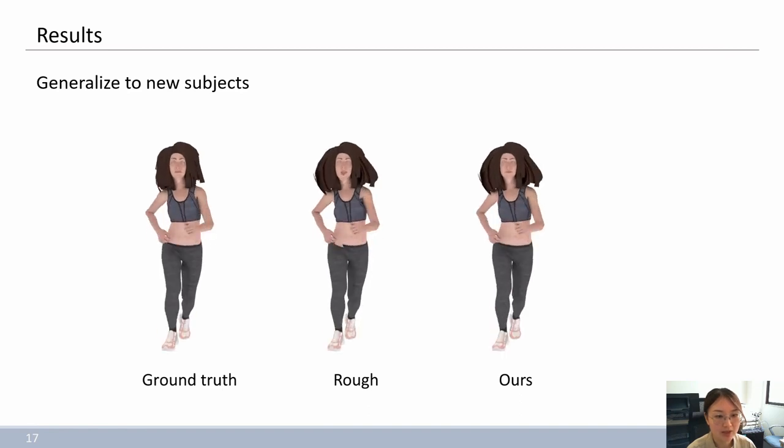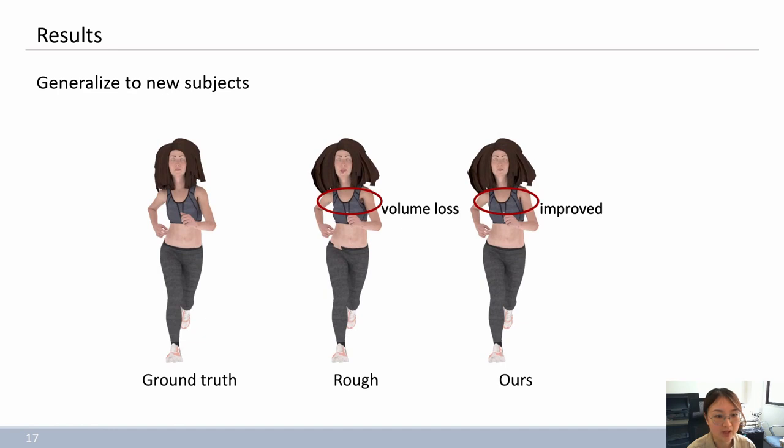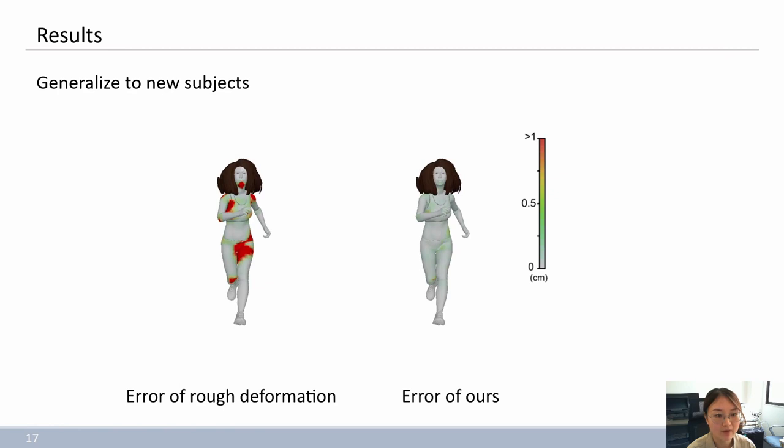Refinements are achieved especially in the areas under the arm and where the pants and belly are in contact. The overall deformation is successfully predicted using our method, with better performance than rough deformation.